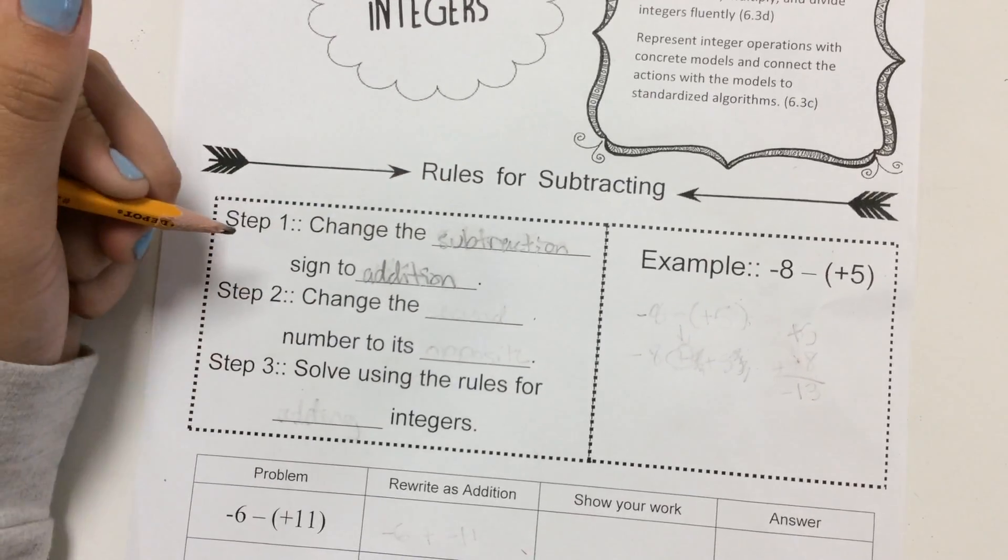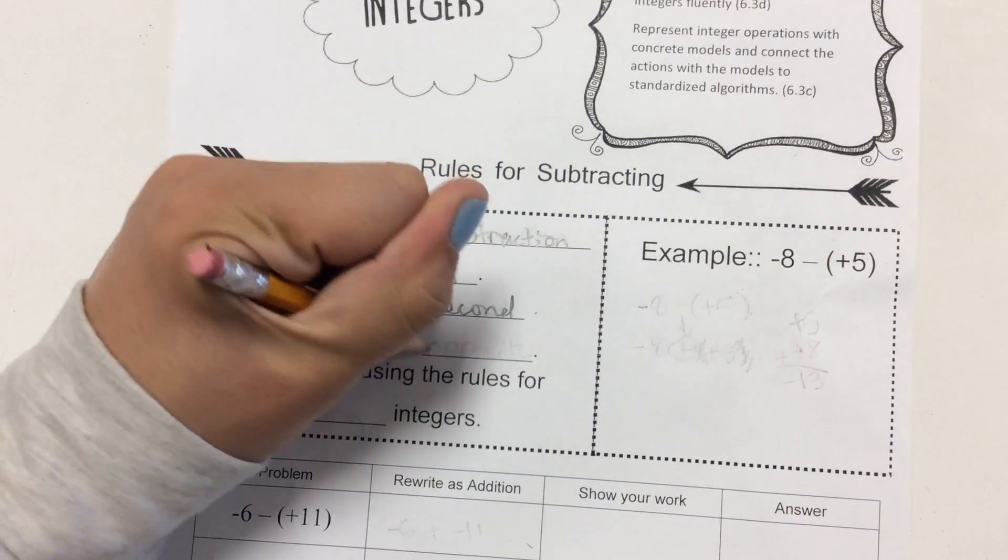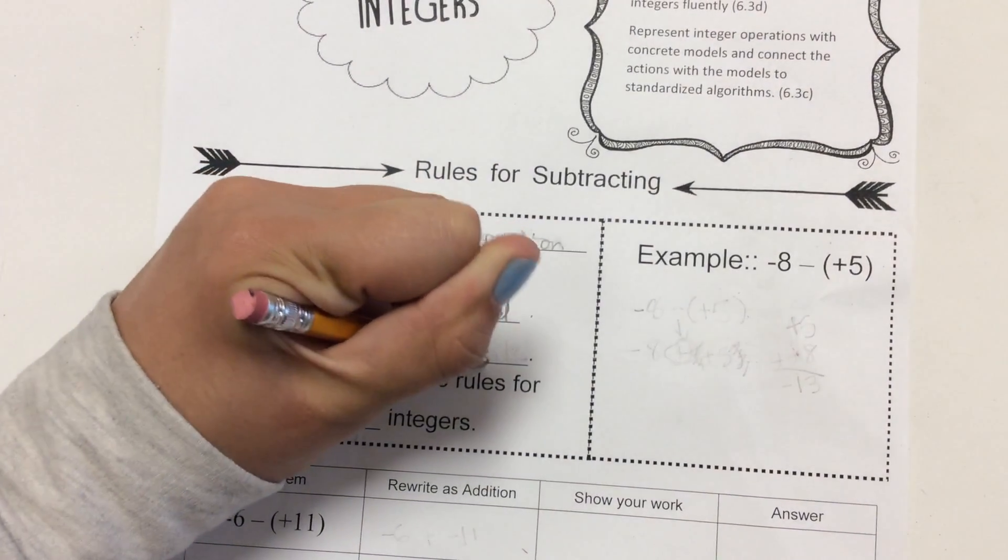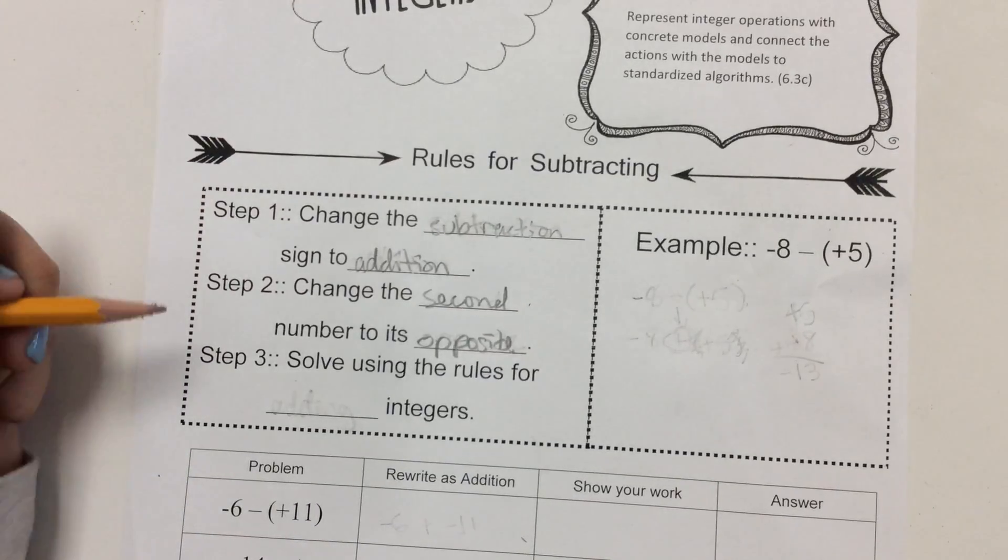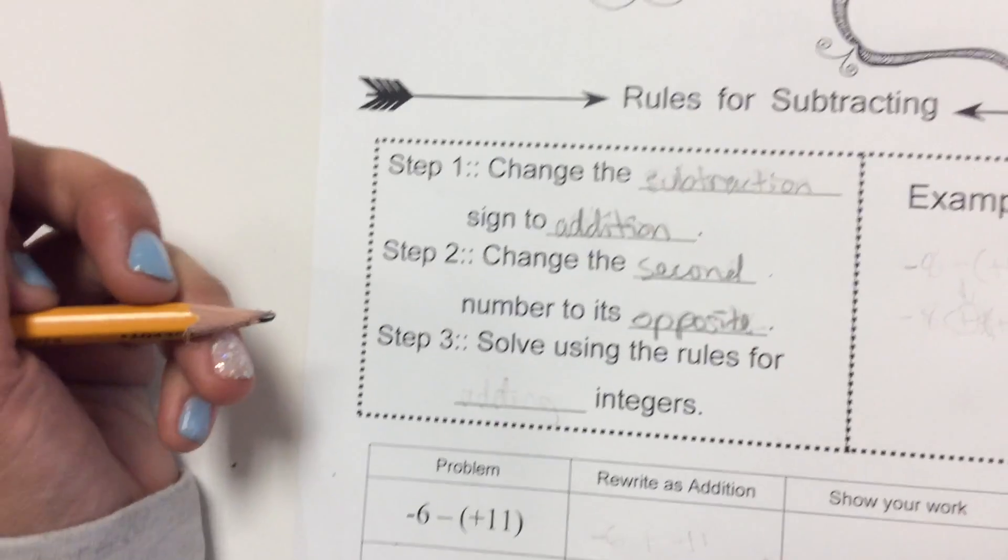The next step is to change the second number to its opposite. Okay, there's only two steps there, and there's three, so I need one more.